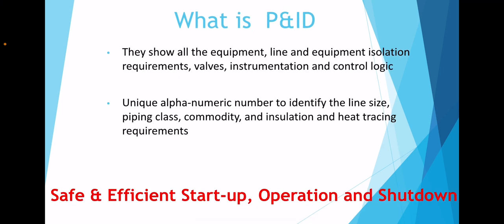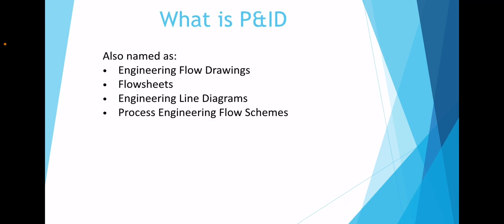P&IDs show all equipment in sequence, lines and equipment isolation requirements, various valves, instrumentation, and control logic associated with the process plant. Line numbers are indicated with a unique alphanumeric number identifying the size of the line, the piping class, the service the pipe sees, and the insulation and heat tracing requirement. P&IDs provide a safe and efficient way to start up, operate, and shut down the plant. They may also be called engineering flow drawings, flow sheets, engineering line diagrams, or process engineering flow schemes by different companies, though the information contained in them is the same.